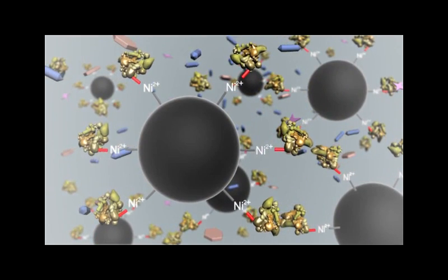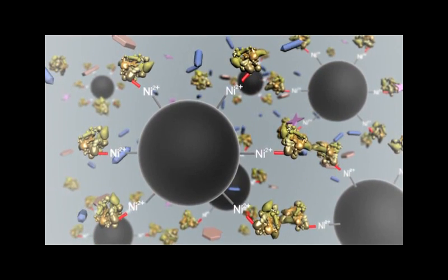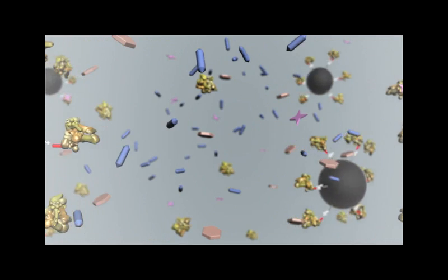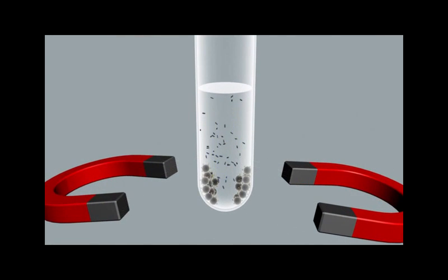Next, a magnetic field is applied which drives the magnetic beads to the sides of the well. The magnet is optimized to ensure the fastest clearing of the magnetic particles. The supernatant is then aspirated, removing impurities, and the beads are washed.